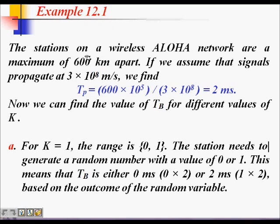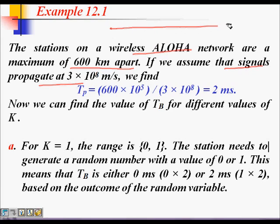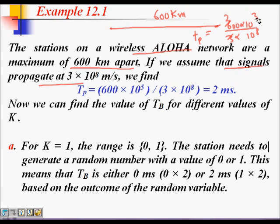Let's solve a numerical example. Stations on a wireless ALOHA network are a maximum of 600 kilometers apart. Signals propagate at 3×10^8 meters per second. The propagation time is 600×10^3 meters divided by 3×10^8 meters per second, which equals 2 milliseconds. This is the maximum propagation delay Tp.